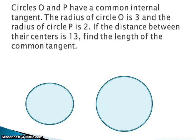Circles O and P have a common internal tangent. The radius of circle O is 3, and the radius of circle P is 2. If the distance between their centers is 13, find the length of the common tangent.